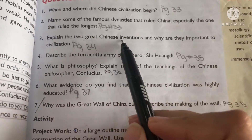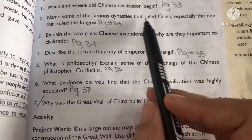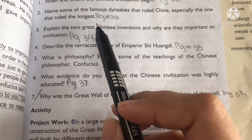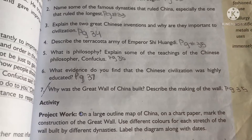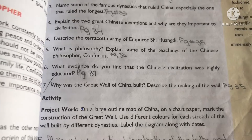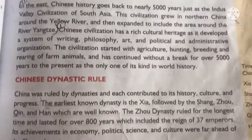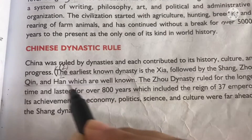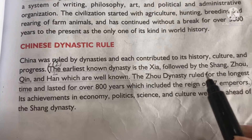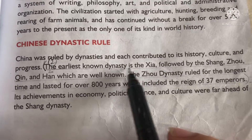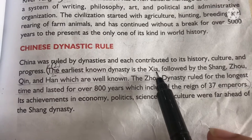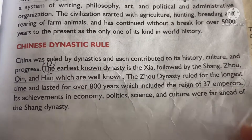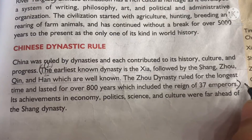Question 2: Name some of the famous dynasties that ruled China, especially the one that ruled the longest. The answer is on page 33. The names of the famous Chinese dynasties begin with the earliest known dynasty, the Xia, and the answer ends at '37 emperors.'